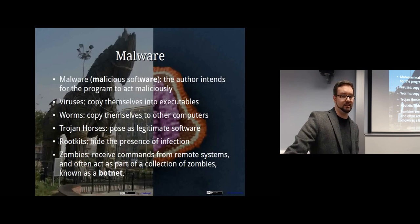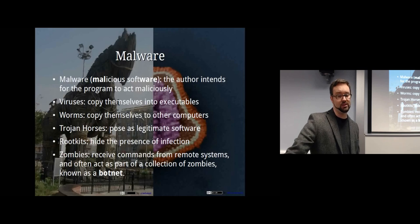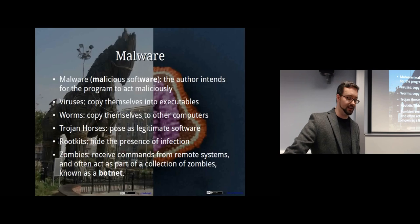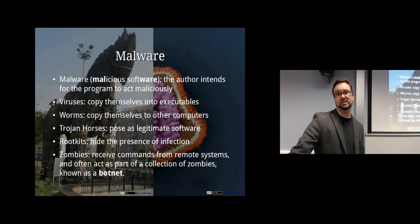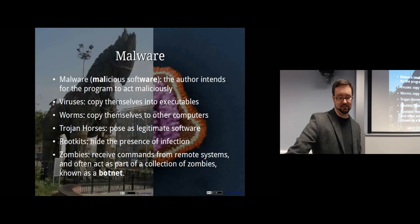A rootkit is malware that basically hides the presence of an infection on your computer. It might hide certain processes or files so that if you're doing process lists and file listings you won't be able to see that there's something there even when there is. A zombie process is a computer infected with malware that allows a remote person to take control of that system, often as part of a botnet — a number of zombie computers controlled by the botnet master.